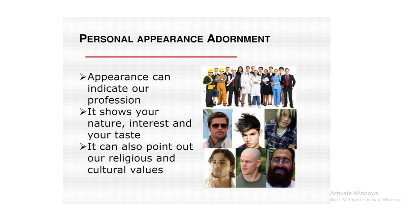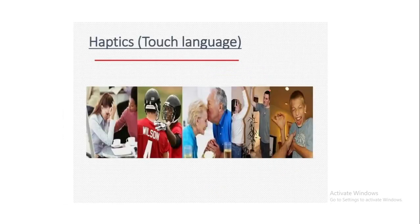Personal appearance and adornment also convey a lot of meanings. Appearance can indicate the profession and can show interest, nature, and taste. It can also point out our religious and cultural values. By just looking at a person, we can say whether that individual is Muslim. In the examples shown, we can easily say these two are doctors, these two are engineers, this may be a lawyer, she is also a doctor, and she may be a business administrator. By looking at the dress code, we can easily understand the personalities of individuals.